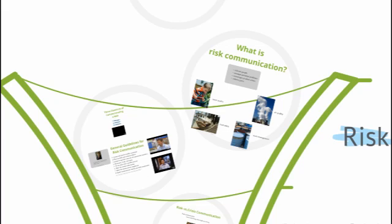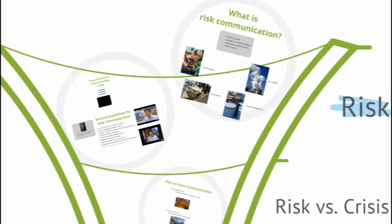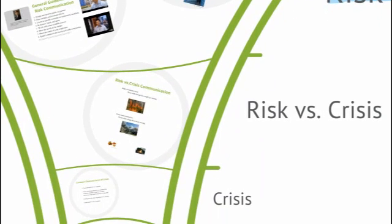So far we've been talking about risk communication in general, here in the top part of this funnel diagram. Remember we said that risk communication techniques are used to handle both risk and crisis situations. But there are differences between a risk and a crisis situation, and this can affect how we communicate. So let's take a closer look at the second tier of the funnel: risk versus crisis communication.